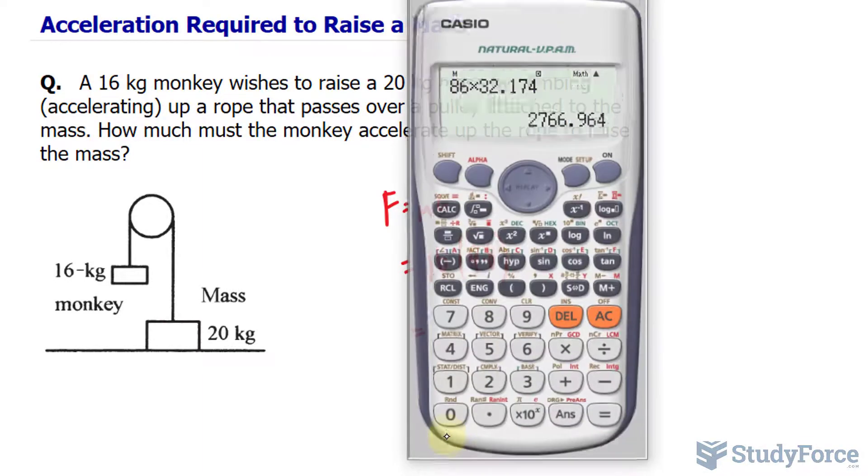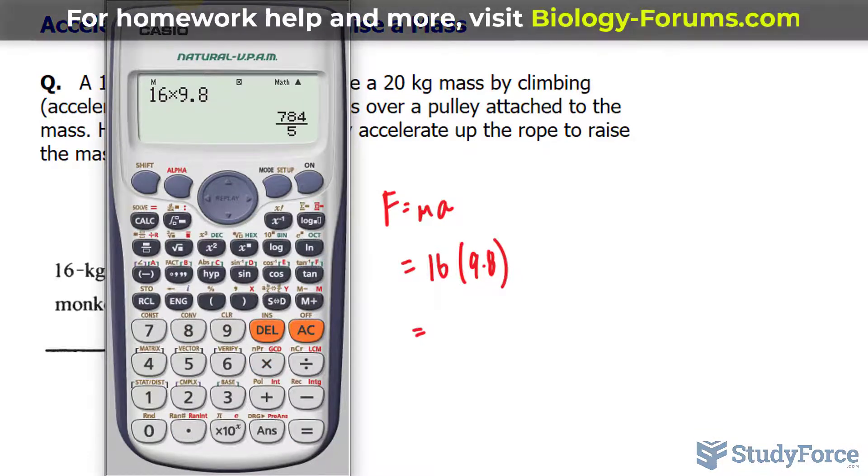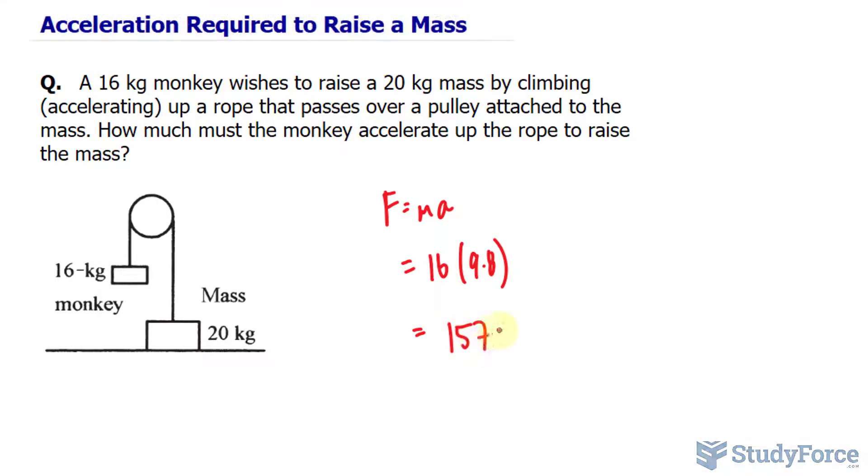By multiplying these two numbers out, we should end up with the amount of tension that the monkey is exerting on that cord. And it's 156.8, which I'll round to 157 for simplicity. So 157 newtons.